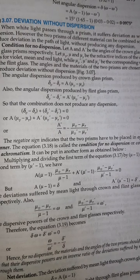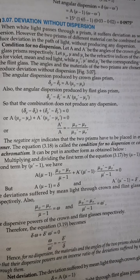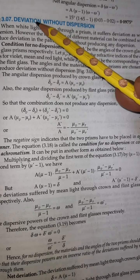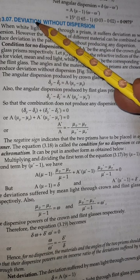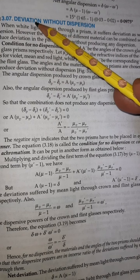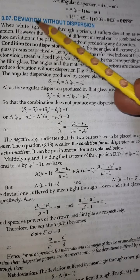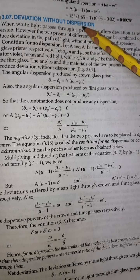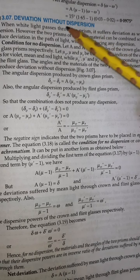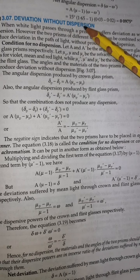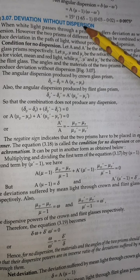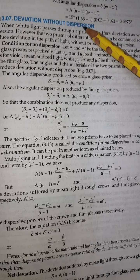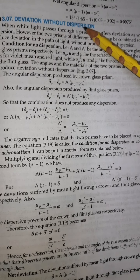This is the second topic. In this case deviation is there but no dispersion. Without dispersion it means theta should be zero.